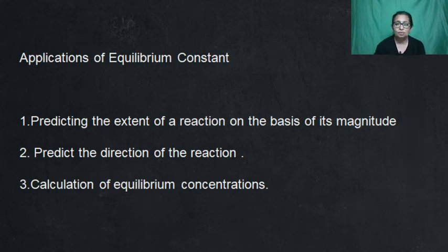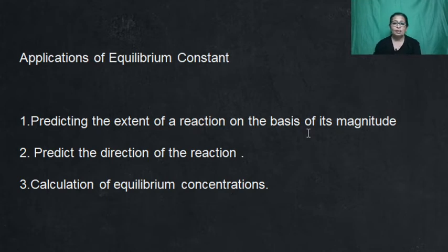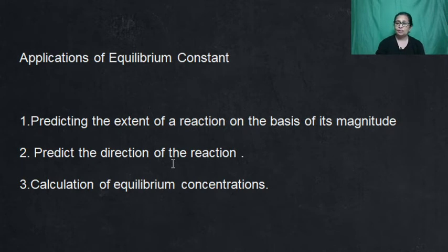Majorly in the calculation part we have three main applications. First, we have extent of reaction — we can calculate how complete or how far a reaction has proceeded. Second, we know the direction: if product is more, then forward force is more, and we can tell the direction of the reaction. Third, we can calculate equilibrium concentrations.